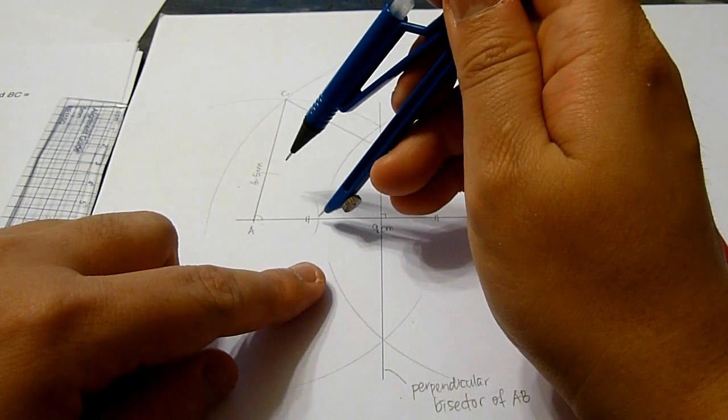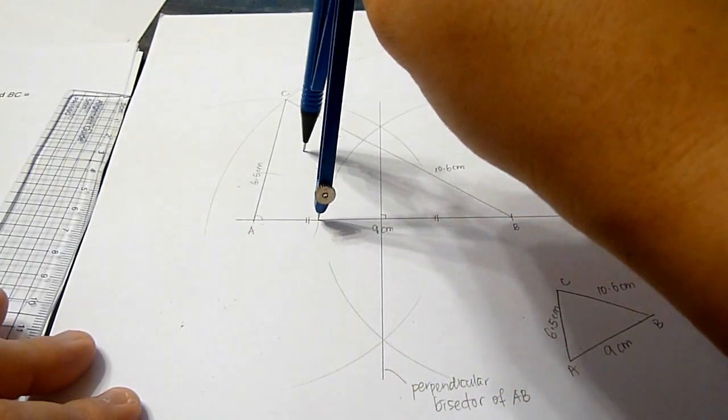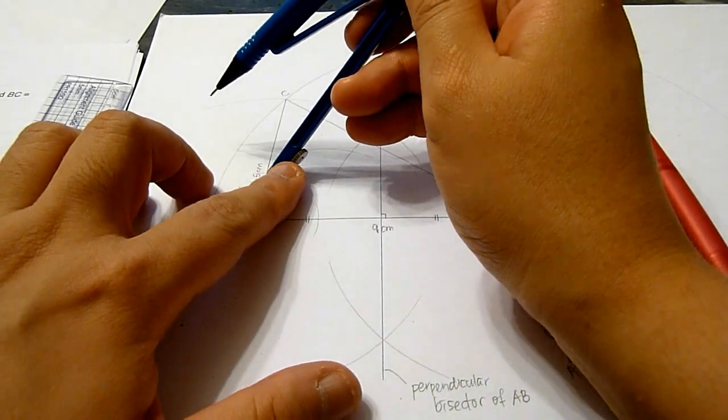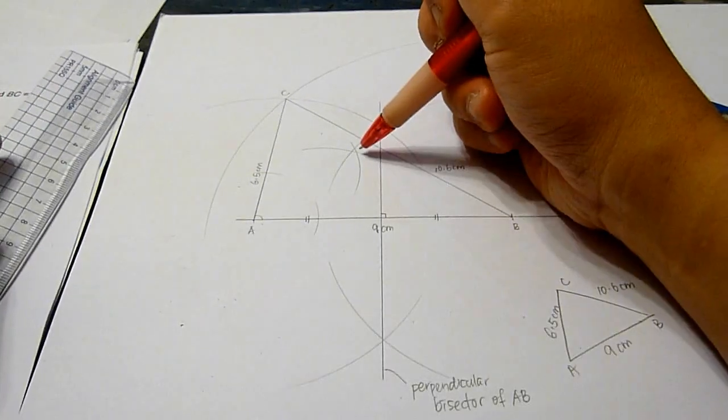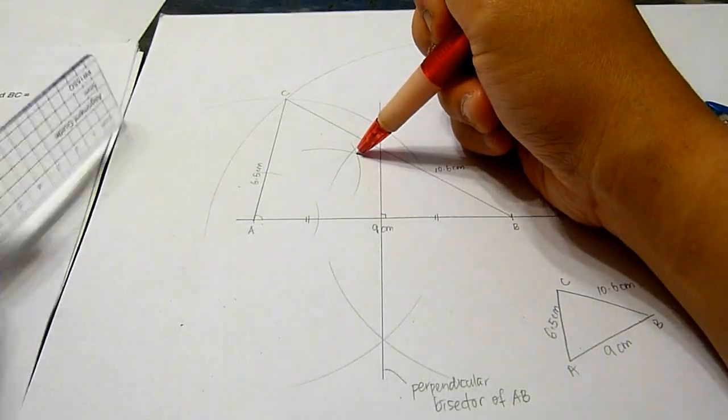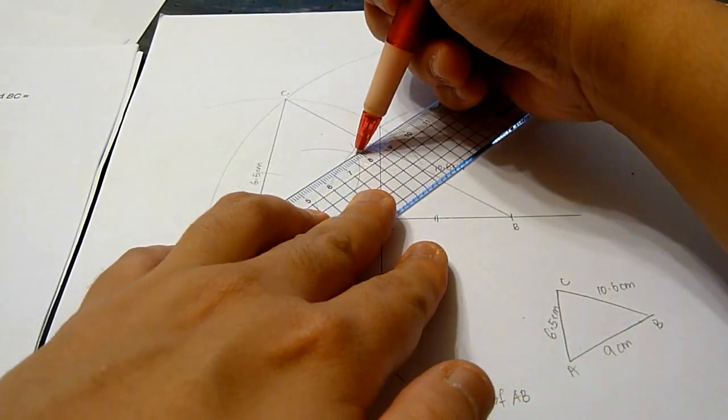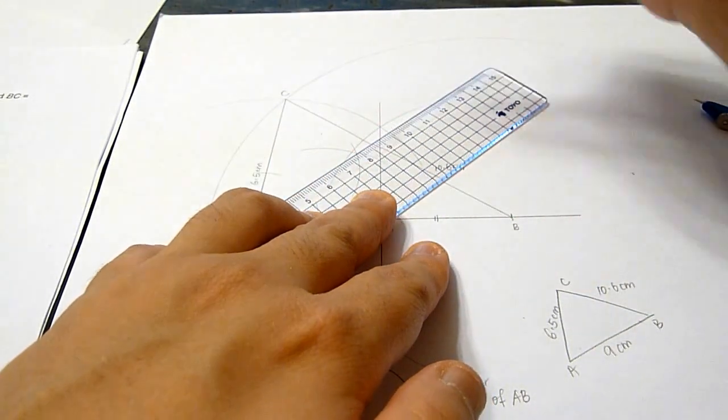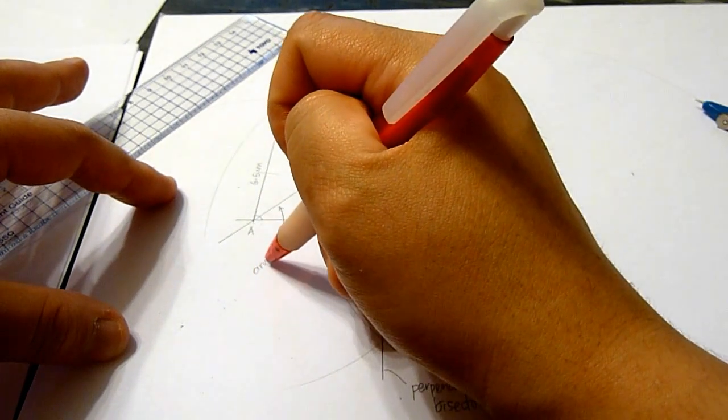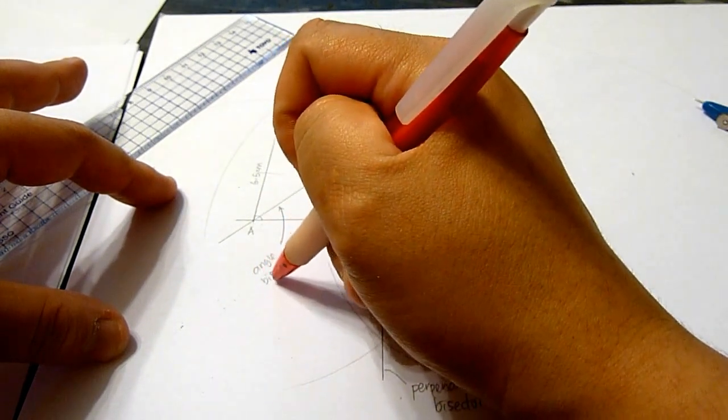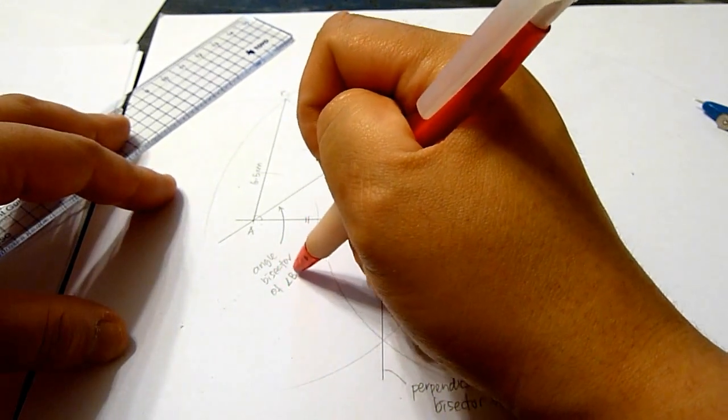Next, we will construct another two arcs from here. The two arcs meet here. By joining the intersection points to point A, this is the angle bisector of angle BAC.